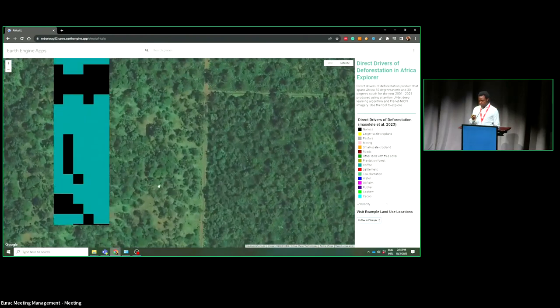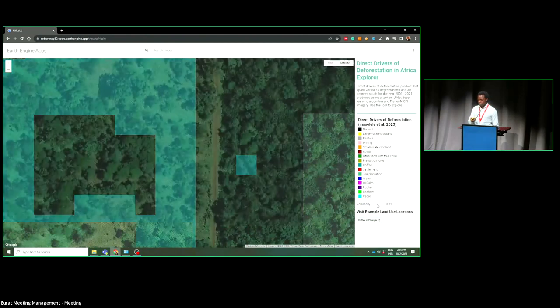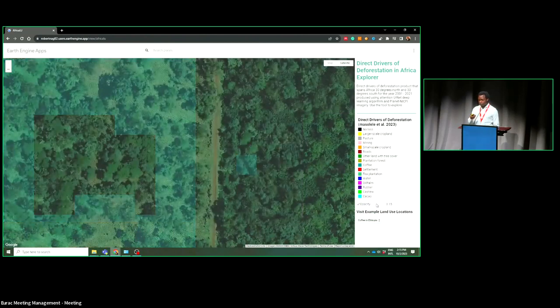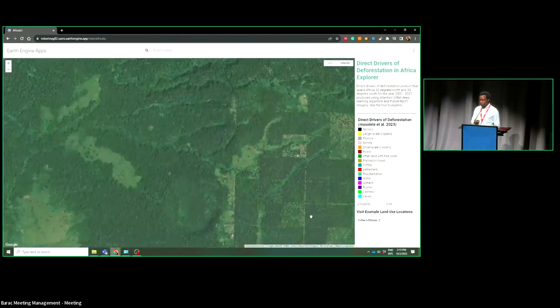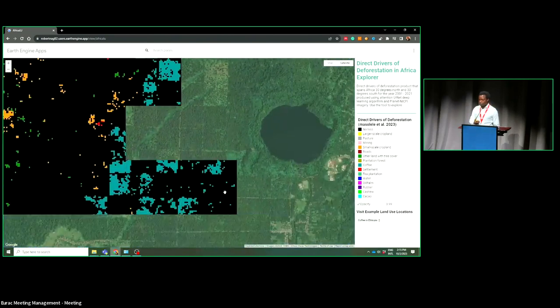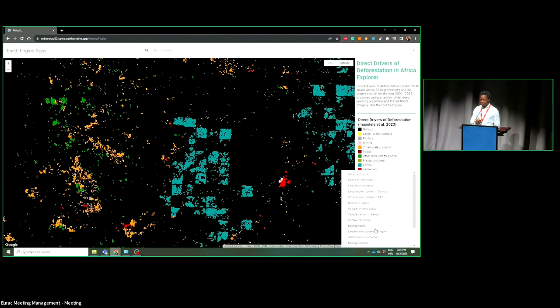This is in Ethiopia here, you have coffee under the canopy. Basically, they have trees. They don't really remove trees. They only plant coffee under the canopy. With very high detail, you can be able also to identify that and classify and then monitor that over time.